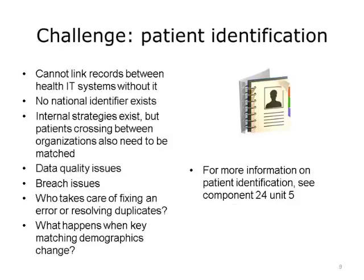A third challenge is related to matching patients. How does the system identify a patient, and when exchanging information with other systems, how do the systems determine that they are communicating about the same patient? We cannot link records between health IT systems without matching patients. If each person had a national identifier that uniquely identified them to the health care system, such as a social security number in financial transactions, this would not be a problem. There have been many discussions about the pros and cons of having a national patient identifier, and the primary argument against it is that it could compromise privacy. Internal strategies exist today in numerous organizations to match identifiers within organizations, but they do not often exist between organizations.